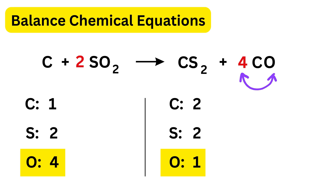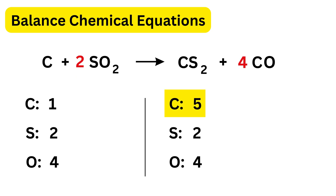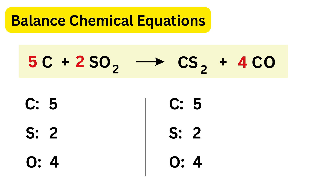Now recount carbons: CS₂ gives one carbon and CO with coefficient 4 gives four carbons, so the right side has 1 + 4 = 5 carbons, two sulfurs, and four oxygens. The left has only one carbon, so we put 5 in front of carbon on the left. Now we have five carbons on the left — both sides match. This is the balanced equation, and we only changed coefficients, not subscripts, so the chemical identities remain correct.